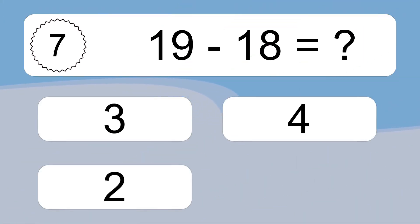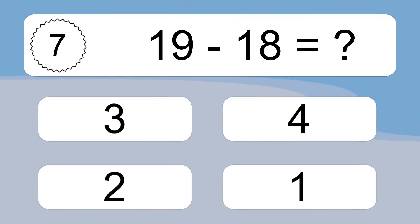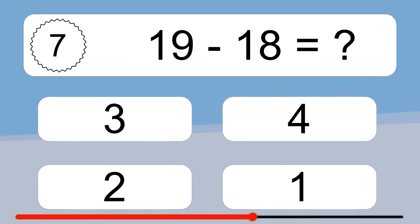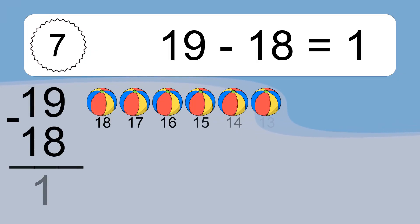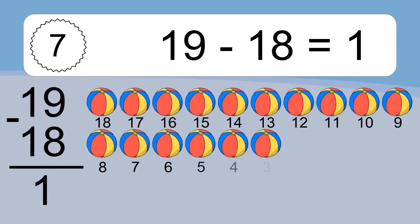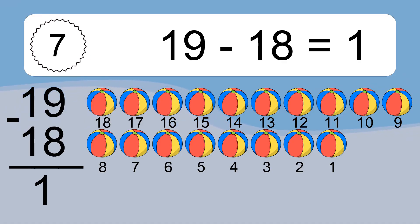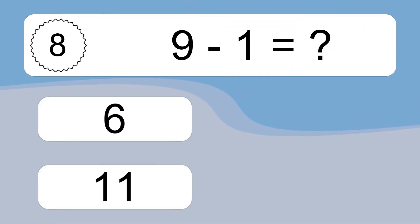19 minus 18 equals what? 19 minus 18 equals 1. Let's count it: 18, 17, 16, 15, 14, 13, 12, 11, 10, 9, 8, 7, 6, 5, 4, 3, 2, 1.